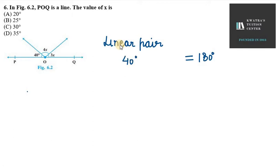So, 40 degrees plus 7x. Why? Because 4x plus 3x is 7x. So, I have taken all angles which were on the line and equaled them to 180 degrees.